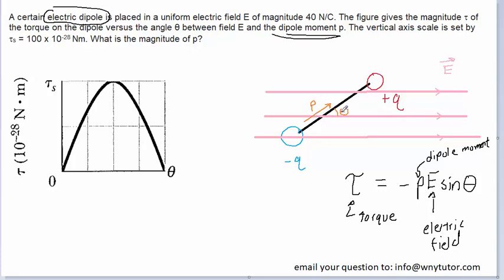It's the angle between the electric dipole moment p and the electric field E. Now we already know E, the magnitude of the electric field, because that was stated in the question. So that's relatively straightforward. As for the torque, we can look at the graph that is provided, and it's going to be most advantageous to use the torque at this point right here.